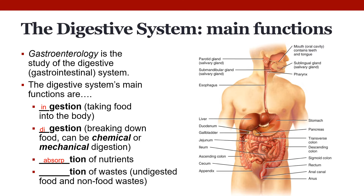Once we break food down into nutrients, the body needs to absorb it, so the GI system functions in absorption. This mainly occurs in the small intestine. Whatever part of the food that does not get absorbed is going to be expelled from the body as waste, and this is called excretion.